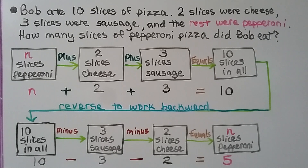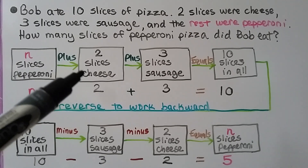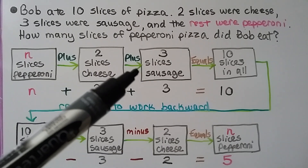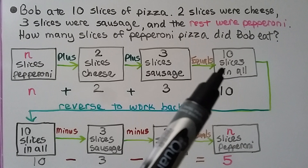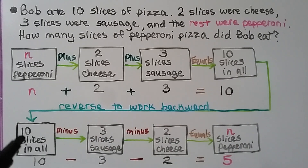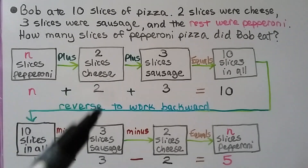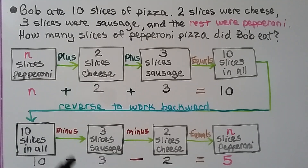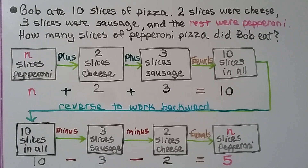Bob ate ten slices of pizza. Two slices were cheese, three slices were sausage, and the rest were pepperoni. How many slices of pepperoni pizza did Bob eat? In the flowchart, some number n of pepperoni slices plus 2 cheese plus 3 sausage equals 10 total. To work backwards, we start with 10 and subtract the 3 sausage and 2 cheese, using inverse operations. 10 minus 3 minus 2 equals 5, so Bob ate 5 slices of pepperoni pizza.